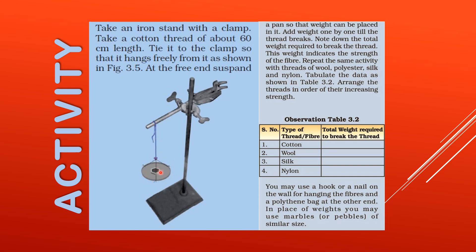Repeat the same activity with threads of wool, polyester, silk, and nylon. Make sure the threads are of the same length and almost the same thickness. Write down which fiber is stronger and arrange the threads in order of increasing strength. You can find the answer by doing the activity or by searching available resources, and we will discuss it in the next class.